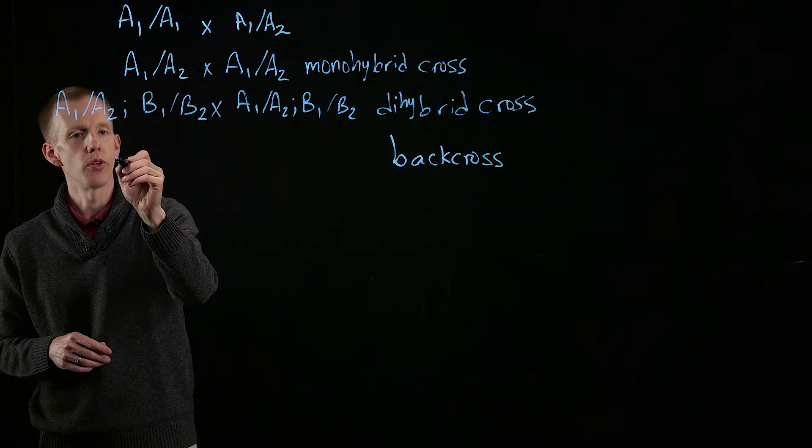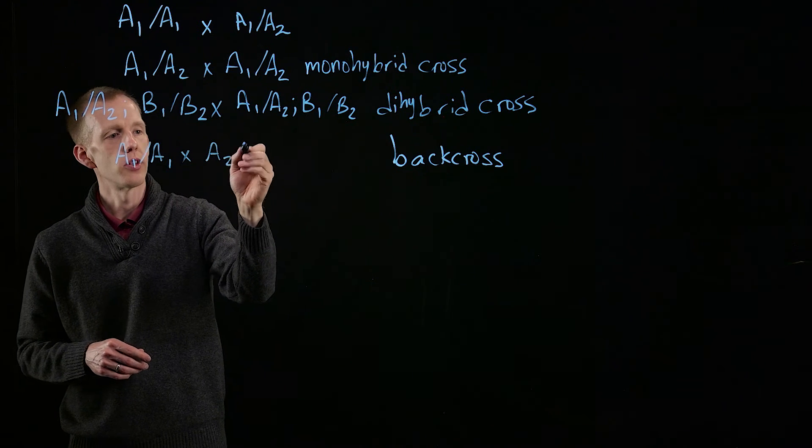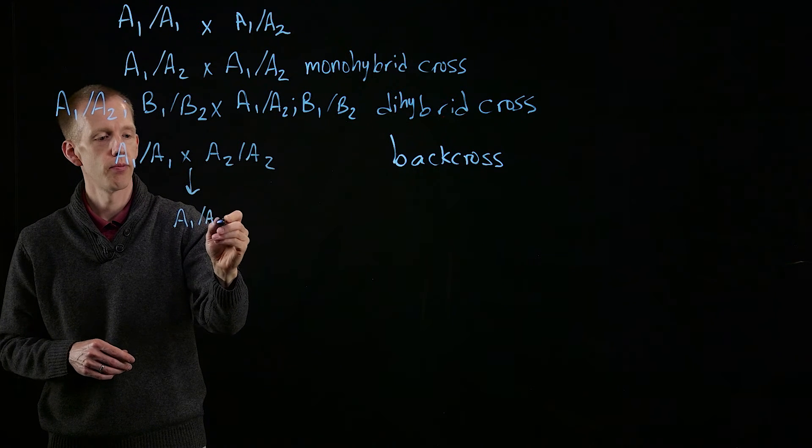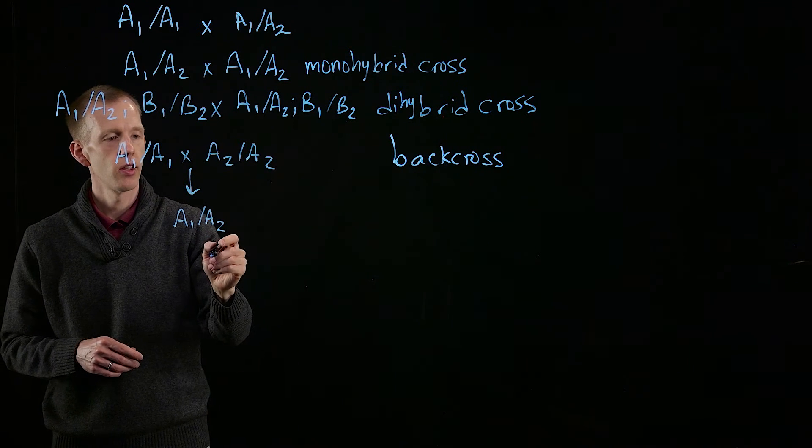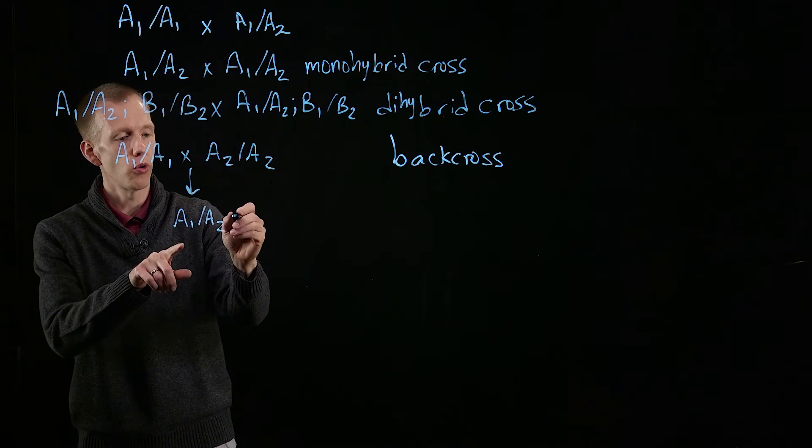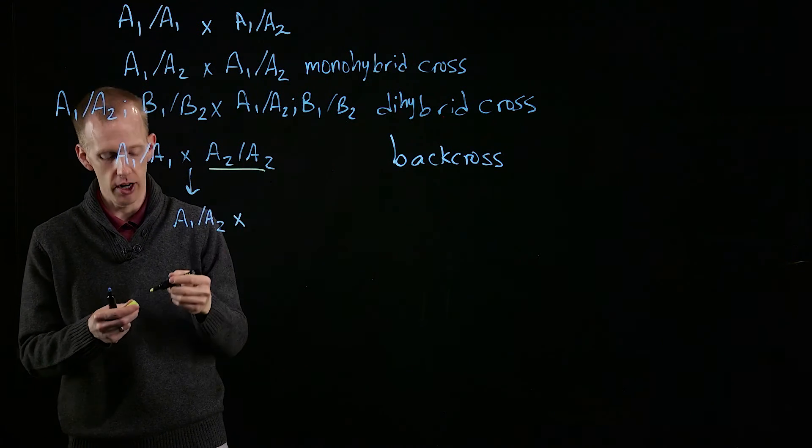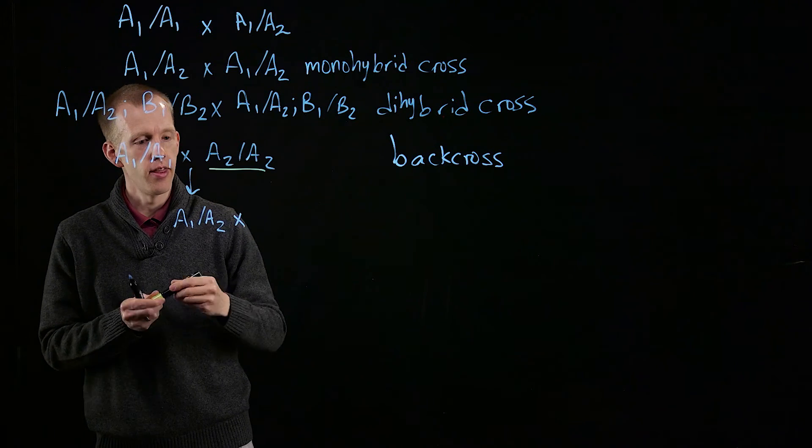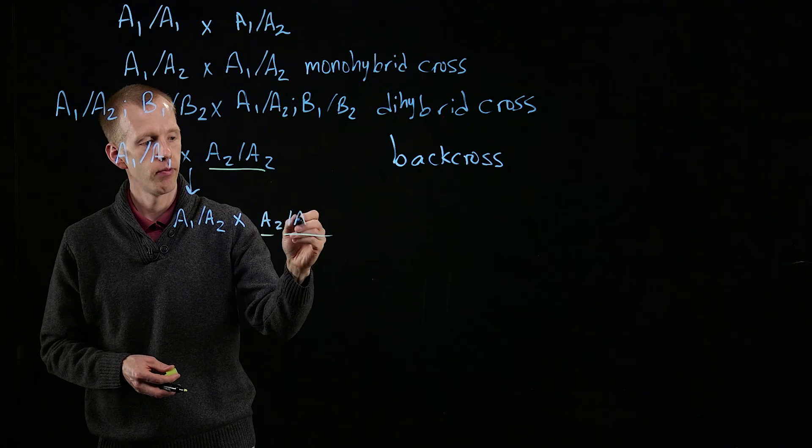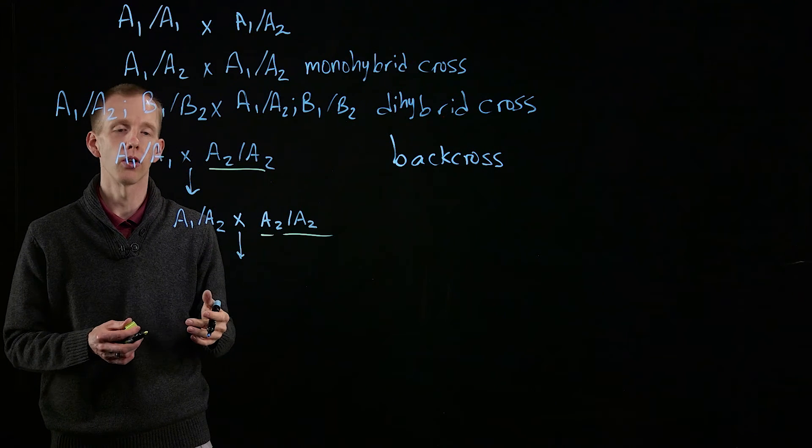And this is when, for example, you use organisms that are homozygous to produce a heterozygote. This is where the term backcross comes in. If you cross that organism to one of its parents back a generation, then that's considered a backcross. And it produces organisms of a particular ratio of genotypes that we'll look at later.